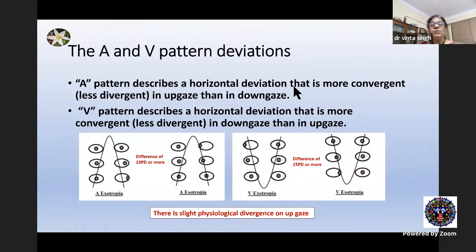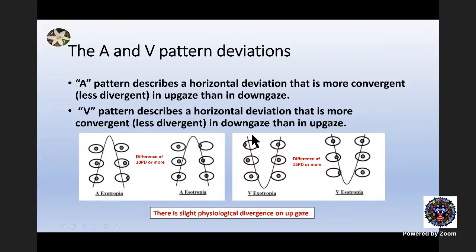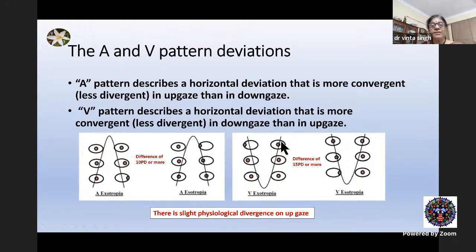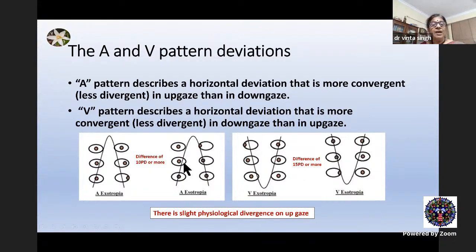A pattern describes a horizontal deviation that is more convergent in up gaze. V pattern describes a deviation which is more divergent in up gaze — like the shape of the alphabet. Because of the slight physiological divergence in up gaze, the significant threshold for V pattern is 15 prism diopters, and for A pattern it is 10 prism diopters. So here you see A pattern exotropia, A pattern esotropia, V pattern exotropia, and V pattern esotropia.